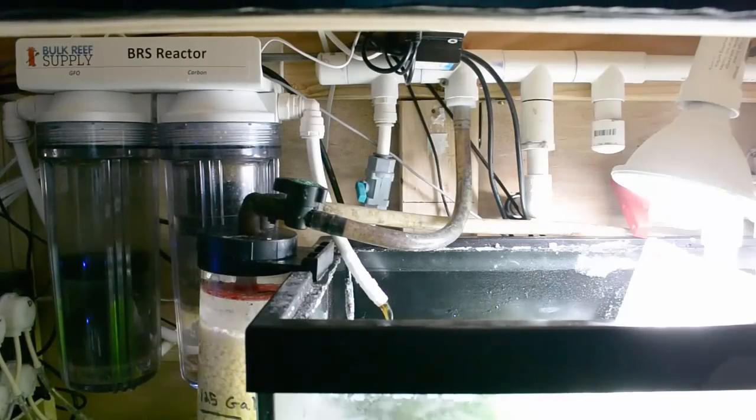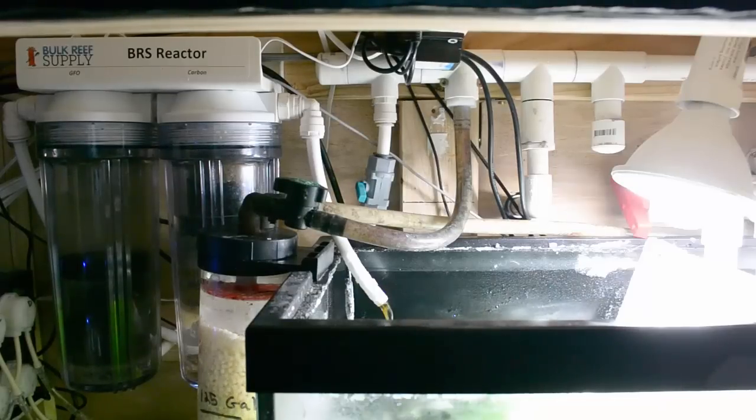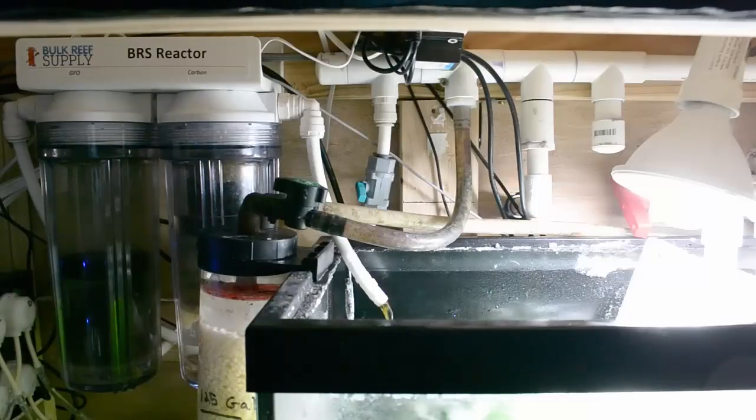Key thing for manifolds, make sure that your main return pump has the ability to handle not only returning enough water flow to the main tank but also power the devices that you need. I have a DC 6000 on this tank and I have it barely putting anything through the main display and most of it's going through the reactors.